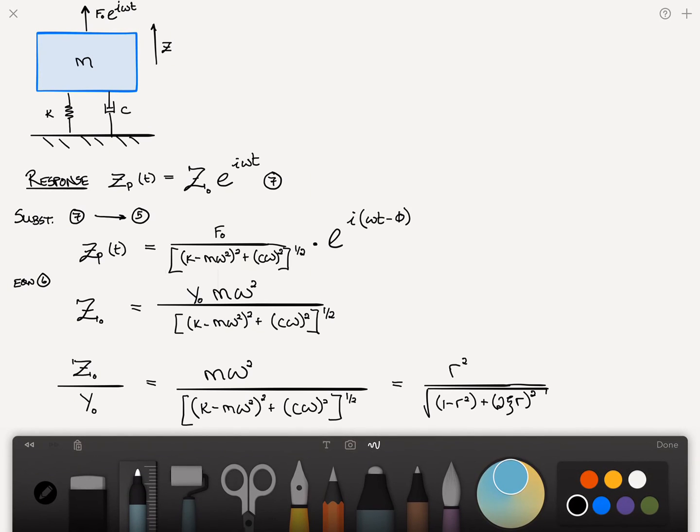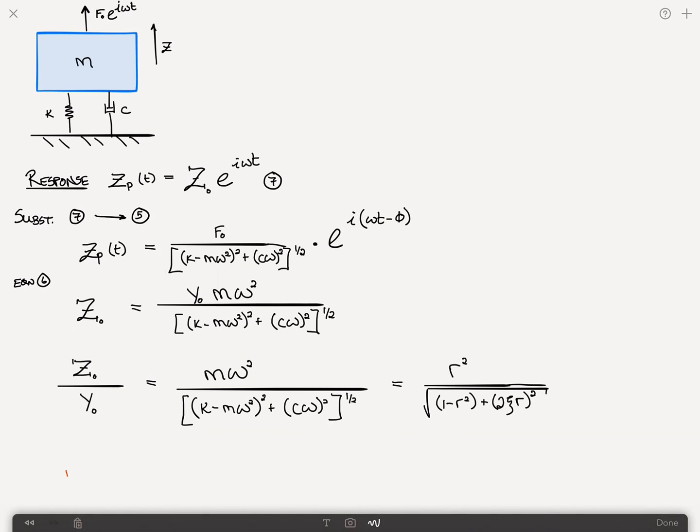In case you've forgotten, we'll do this in red just to keep it separate, r is equal to the reduced frequency or the ratio of the frequency to the natural frequency, so this is just omega over omega n. We know that omega n is equal to k over m. We know that zeta is equal to the damping ratio, it's c divided by c critical and we know that c critical is equal to 2 times the square root of mk.